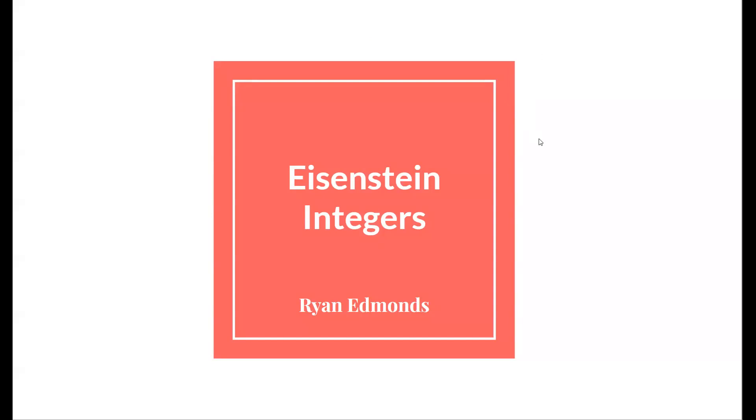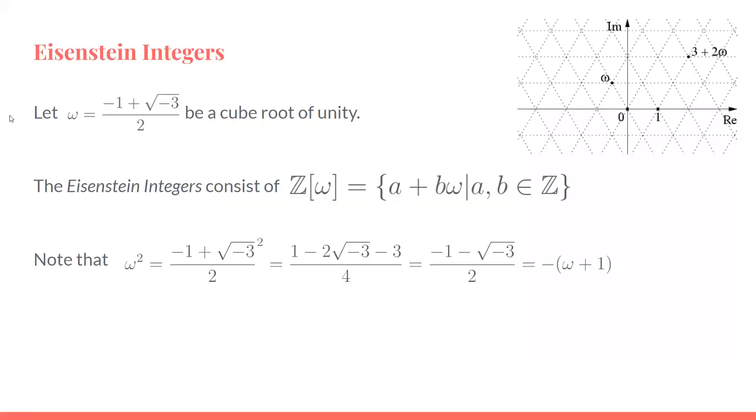To construct the Eisenstein integers, we start with a cube root of unity. We'll let ω be equal to (-1 + √-3)/2. Now we'll do a + bω, where a and b are integers, and that will give us this entire set of Eisenstein integers.